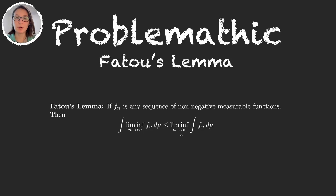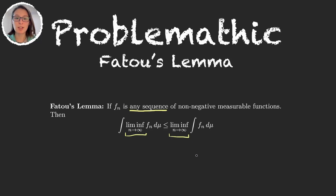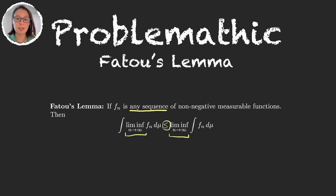It might seem awful but let me convince you that it's actually amazing. First of all, for the monotone convergence theorem we had one sequence that was increasing and that it converges to another function. Now we have just any sequence, so we just grab any sequence of functions. The second thing that makes this great is that here we have the inferior limit and the inferior limit. Because we're grabbing just any sequence of functions, the limit may not even exist. This gives us a way to bound the inferior limit of the integral. And yes, it might seem like a drawback that we have a less than or equal to instead of an equal to, but usually all we care about is whether the integral is finite or infinite — we're not usually interested in calculating the exact value — so inequalities such as this one are extremely useful anyway.